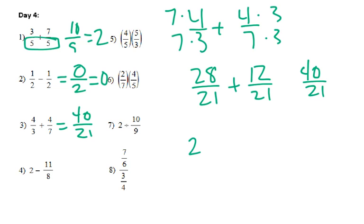Then number 4, whenever we have a whole number, we can turn it into a fraction by putting 1 under it, and then multiply it by 8 to get us the same denominator. Or I could have just thought, I want a denominator of 8, so 2 times 8 gives me 16, so 16 over 8 is what we got. So subtract that, and we get 5 over 8.